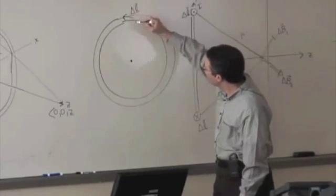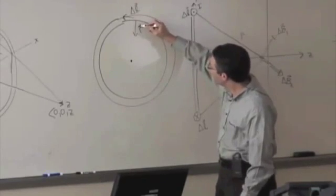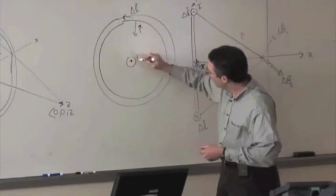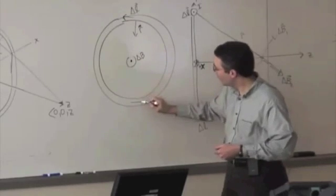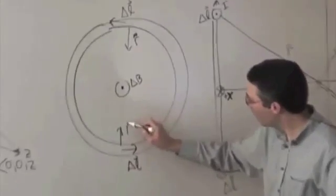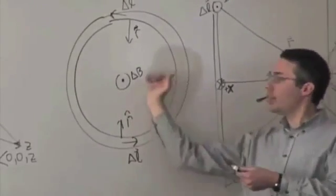And if that's delta L, and if that's R hat, right, delta L cross R hat gives me a delta B out. But if this were delta L going in that direction, and that's R hat, delta L cross R, thumb points out.